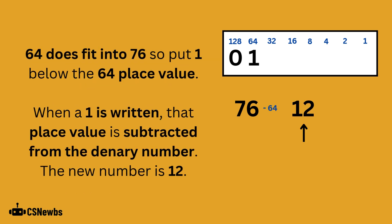64 does fit into 76, so put a 1 below the 64 place value. When a 1 is written, that place value is subtracted from the denary number. So 76 take away 64 gives the new denary number of 12.